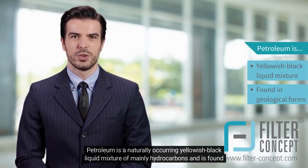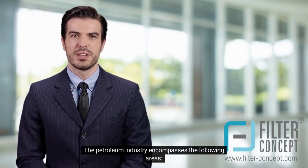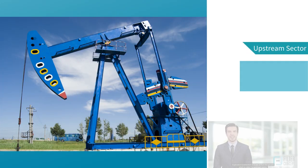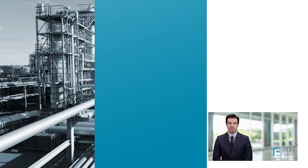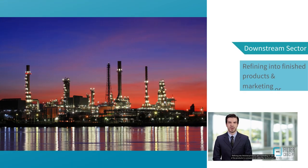The petroleum industry encompasses the following areas: exploration and extraction of crude oil from the ground, which is called the upstream sector; transportation to refineries and product distribution centers, called the midstream sector; and refining into finished products and marketing or sale of the products to consumers, called the downstream sector of the oil and gas industry.